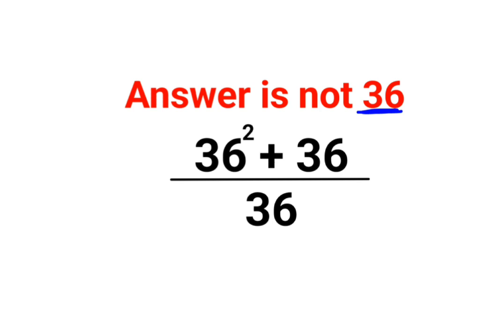See, I understand 36 square here. I can write this 36 square as nothing but 36 multiplied by 36 plus 36 can be written as it is. And then we have divided by 36.